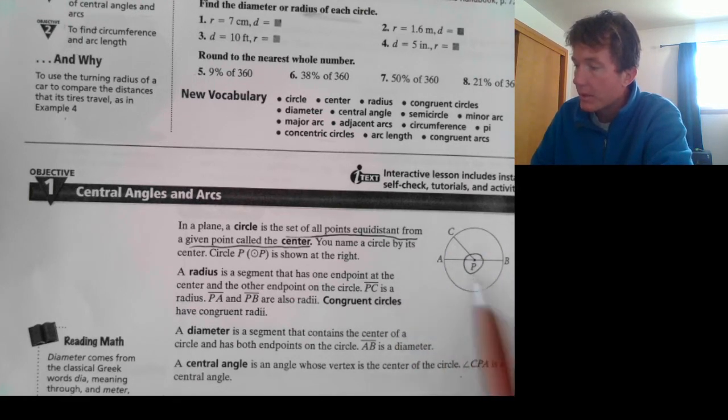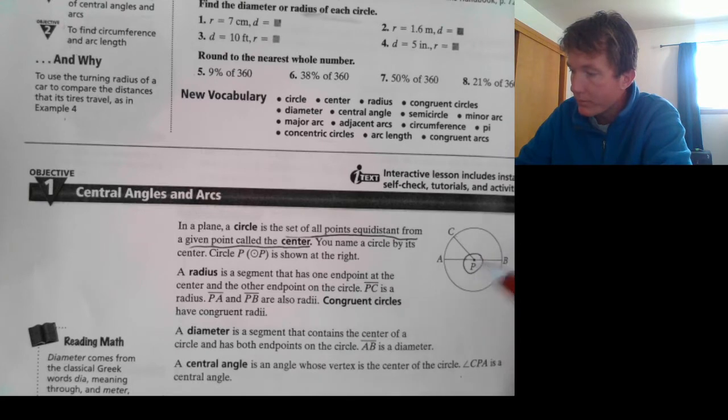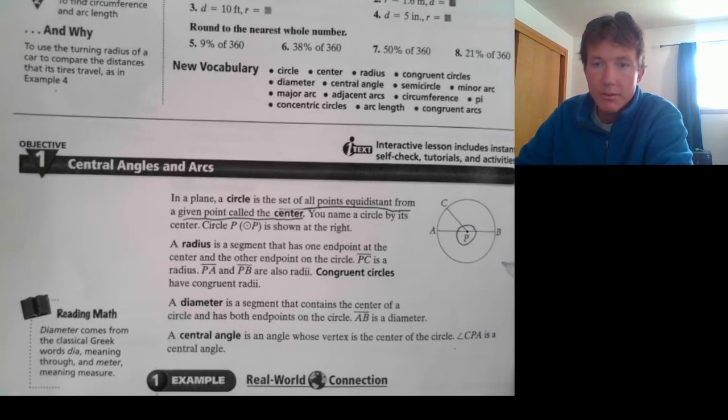So, the circle P is shown at right. So, this circle is named by its center. The radius is a segment that has one endpoint at the center and the other endpoint on the actual circle itself. So, we see they show this radius. This is PC, the center, and the point C is on the circle. And then, PA and PB are also radii, which is the plural of radius.